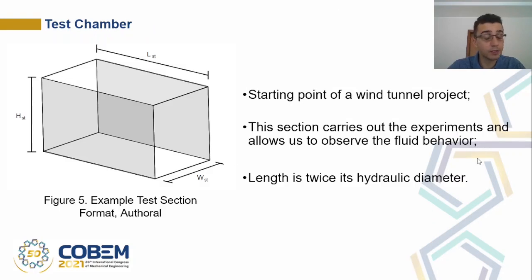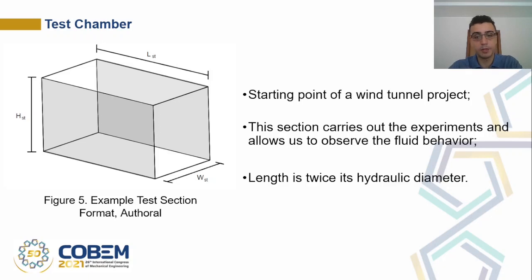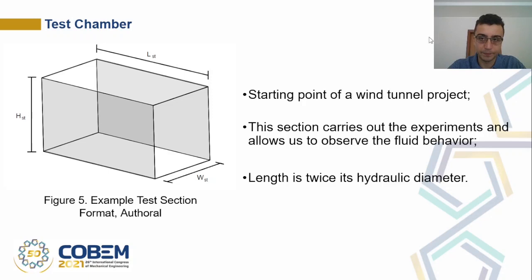The test chamber is the starting point of the wind tunnel project. This section carries out the experiments and allows us to observe the fluid behavior. The length is twice the hydraulic diameter. Here we have an example of a test section with a square cross-sectional area.